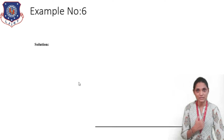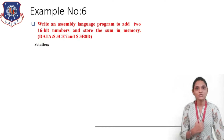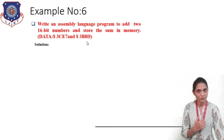Next we will see another example in which we have to write the assembly language program for addition of two 16-bit numbers and store this sum to some memory location. The data given is: first 16-bit data is 3CE7 and second data is 3B8D.